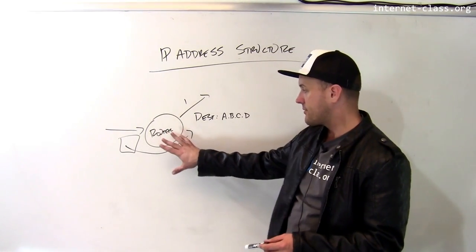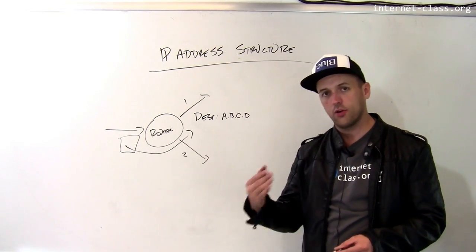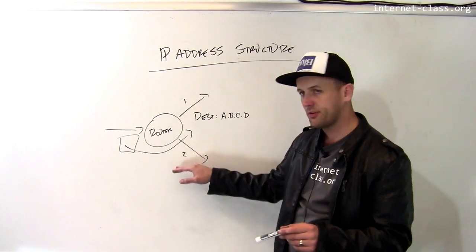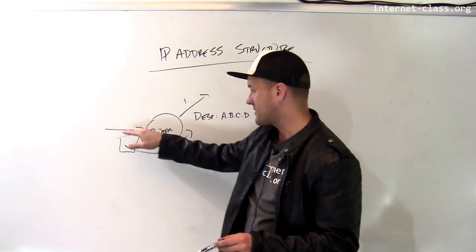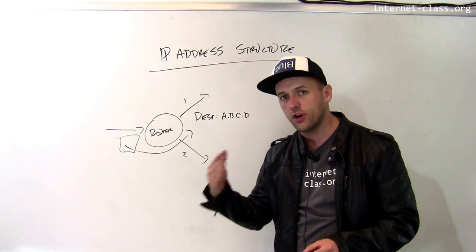So here's an internet router and when packets arrive on one of its links, all it's doing over and over, all day long, is making this simple decision. If a packet arrives on this link, should I send it out on link one or link two? I'm just doing that over and over and over and over again.